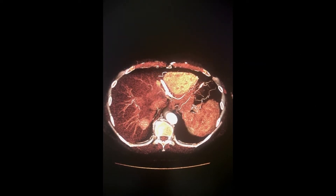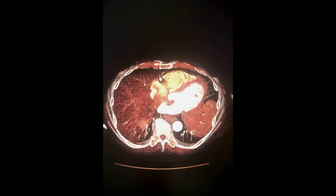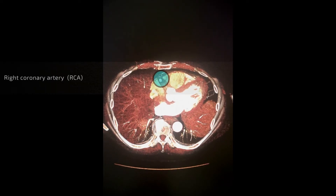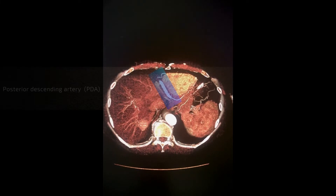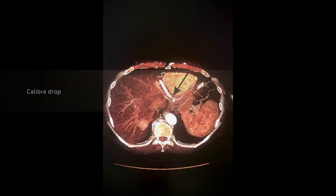This is a rendered image of the coronary vessels. This is the right coronary artery, which is quite large in caliber and extends through to the posterior descending artery. You can see that there is a caliber drop compared with the adjacent vessels.